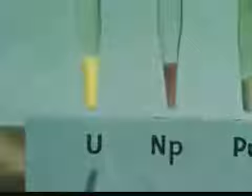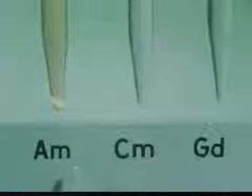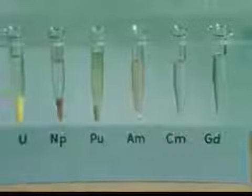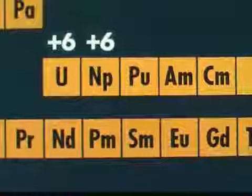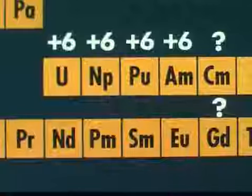Let's continue adding our acetate solution to neptunium, plutonium, americium, curium, and gadolinium. Here are the results, half an hour later. Precipitates are present in uranium, neptunium, plutonium, and americium, indicating the presence of plus six ions. But no precipitates appear in the curium or gadolinium solutions — apparently, they cannot be oxidized to the plus six state. Our tests show that uranium, neptunium, plutonium, and americium all oxidize to a plus six state. The curium and gadolinium do not form plus six ions.